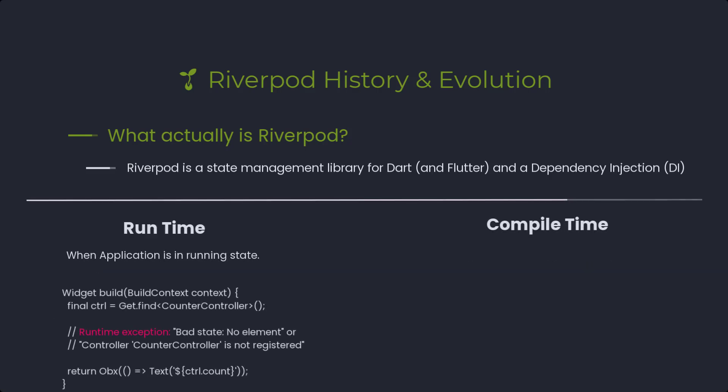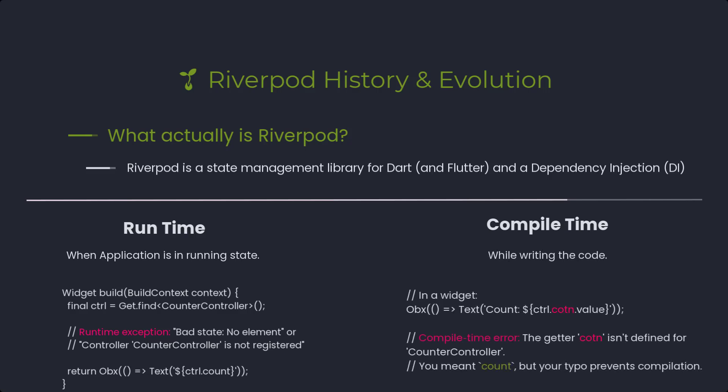Riverpod provides compile-time safety. What is compile time versus runtime? Runtime means the application is actually running and you face exceptions — in GetX we face a lot of runtime exceptions. Compile time means that while writing code, you see a red underline indicating an error you must fix before running the application. In Riverpod, you cannot run your application until all compile-time errors are resolved. This is very valuable for developers because you don't have to wait for the app to run to discover errors.